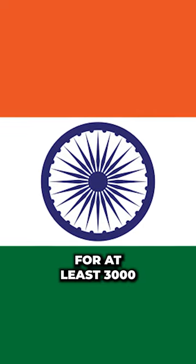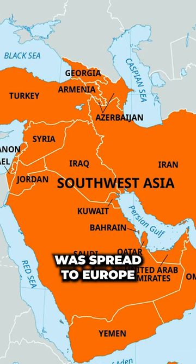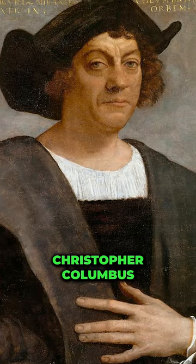It has been cultivated for at least 3,000 years in Western Asia and was spread to Europe, first in Greece and Italy. Records of cucumber cultivation appear in France in the 9th century and England in the 14th century, and the cucumber was introduced in Haiti in 1494 by Christopher Columbus.